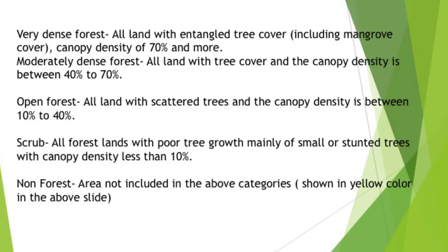In the figure we can see that very dense forest has all land with entangled tree cover, including mangroves, and canopy density of about 70% or more. Moderately dense forest has canopy density between 40 to 70%. Open forest has scattered trees with canopy density between 10 to 40%. Scrub is forest land with poor or stunted tree growth and canopy density less than 10%. The non-forest area is shown in yellow in the slide.